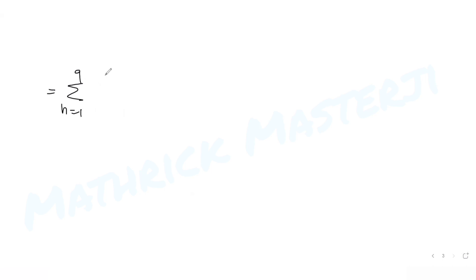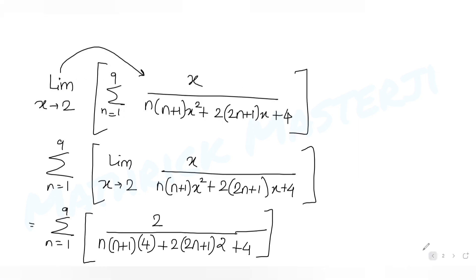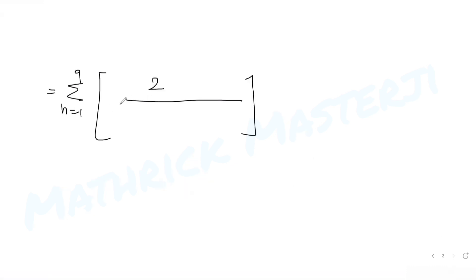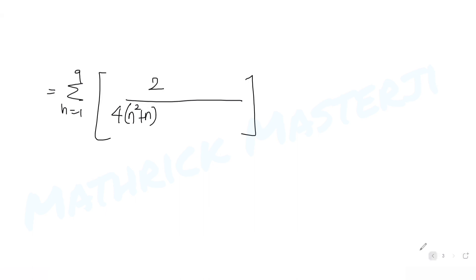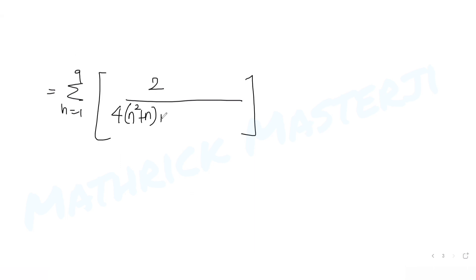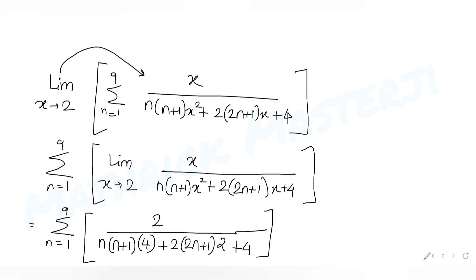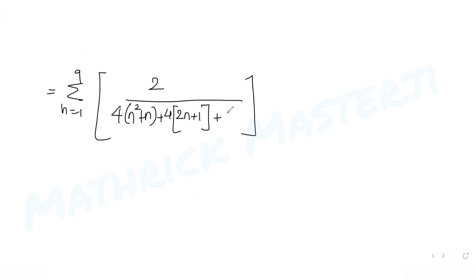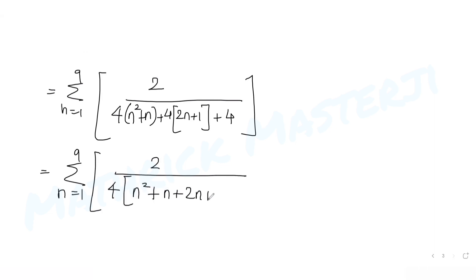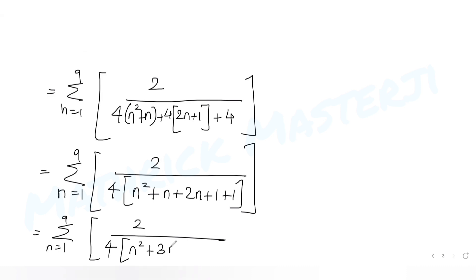Simplifying further, we get summation n=1 to 9 of 2 over n(n+1)·4, which gives 4n²+4n, plus 4(2n+1) giving 8n+4, plus 4. Taking 4 as common, we get summation n=1 to 9 of 2 over 4(n²+3n+2).